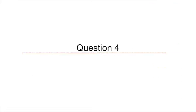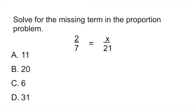Question four is a question about proportions. They're asking you to solve for the missing term in the proportion problem. Here what you do is you're going to multiply across like this. So you multiply 7 times the x, from the bottom left to the top right, that gives you 7x, and then you multiply 21 times 2, and that gives you 42.